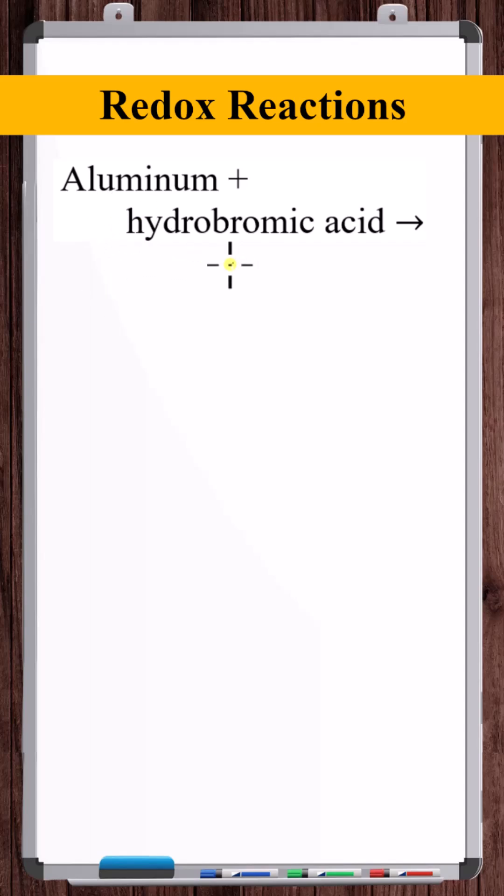Let's write the molecular, ionic, and net ionic equations for when aluminum is put into a solution of hydrobromic acid.